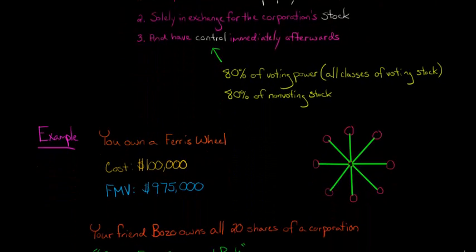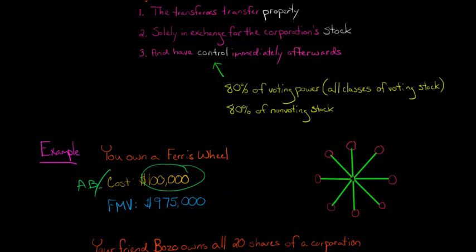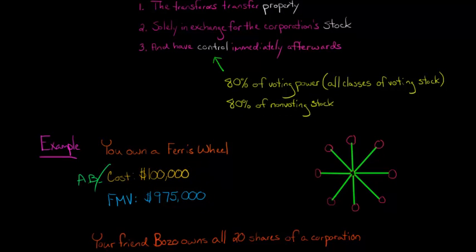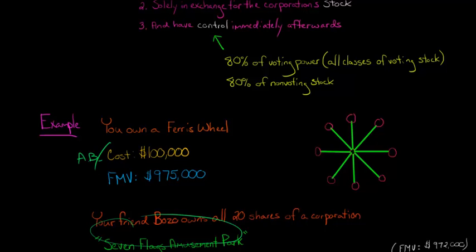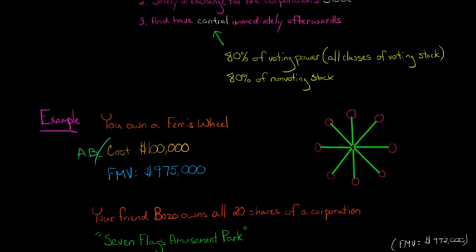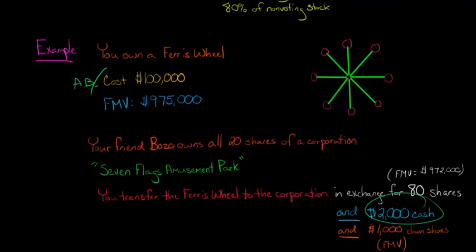Let's say you own a Ferris wheel with a cost and adjusted basis of $100,000 and fair market value of $975,000. Your friend Bozo the Clown owns all 20 shares of Seven Flags Amusement Park corporation. You transfer the Ferris wheel to the corporation in exchange for 80 shares of stock, plus $2,000 cash and $1,000 of clown shoes. This is called boot.